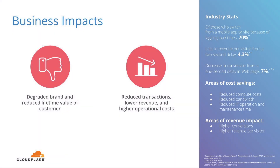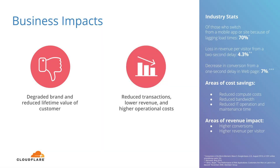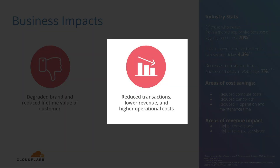What are the business impacts of the common performance and availability problems most companies experience? There are two primary buckets of potential business outcomes. The first is long-term strategic impact, such as degraded brand and reduced lifetime customer value. The second bucket is near-term financial impact, such as lower revenue and higher operational costs.